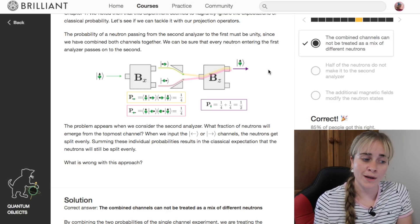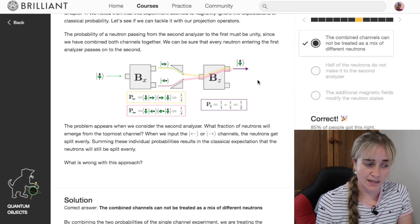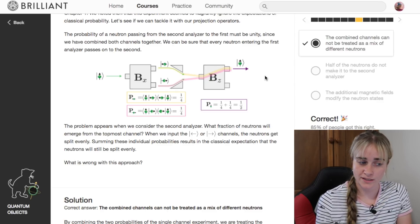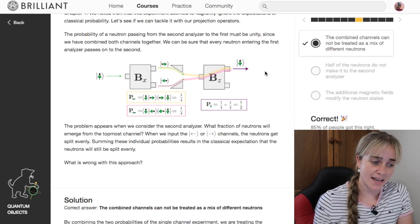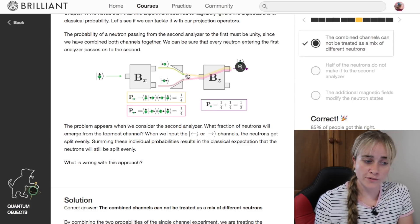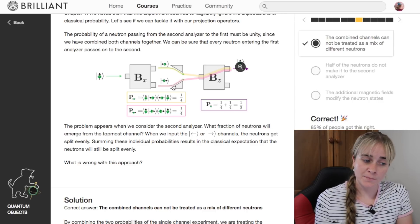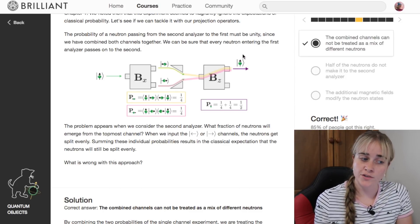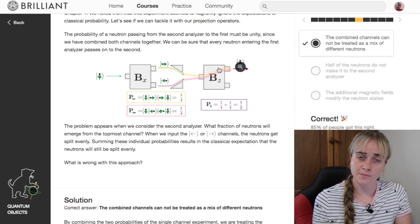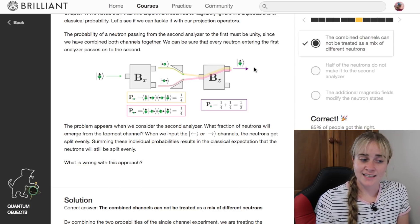We can work out that the probability of being on this yellow path would be a quarter, there's a 50-50 chance here and another 50-50 chance here. Likewise for the pink path it would be one quarter. With classical probabilities we would say there's a quarter probability being yellow, quarter probability being pink, so if we sum both of those paths, a quarter plus a quarter equals a half, and we would expect in this final experiment for half of the neutrons to come out spin up.